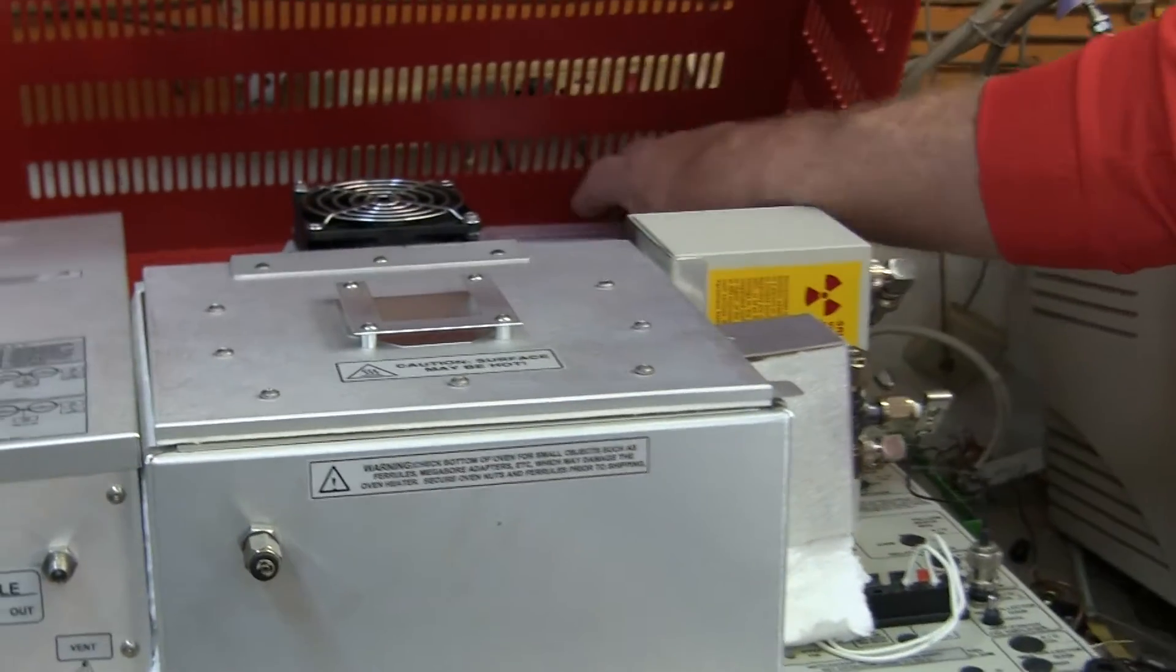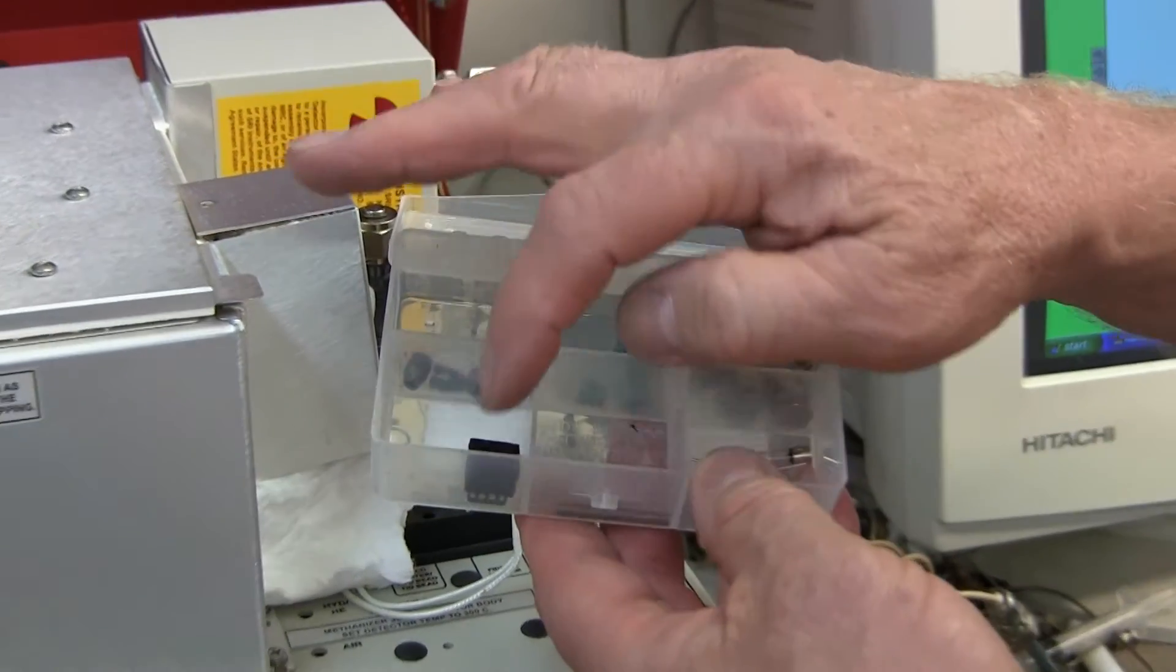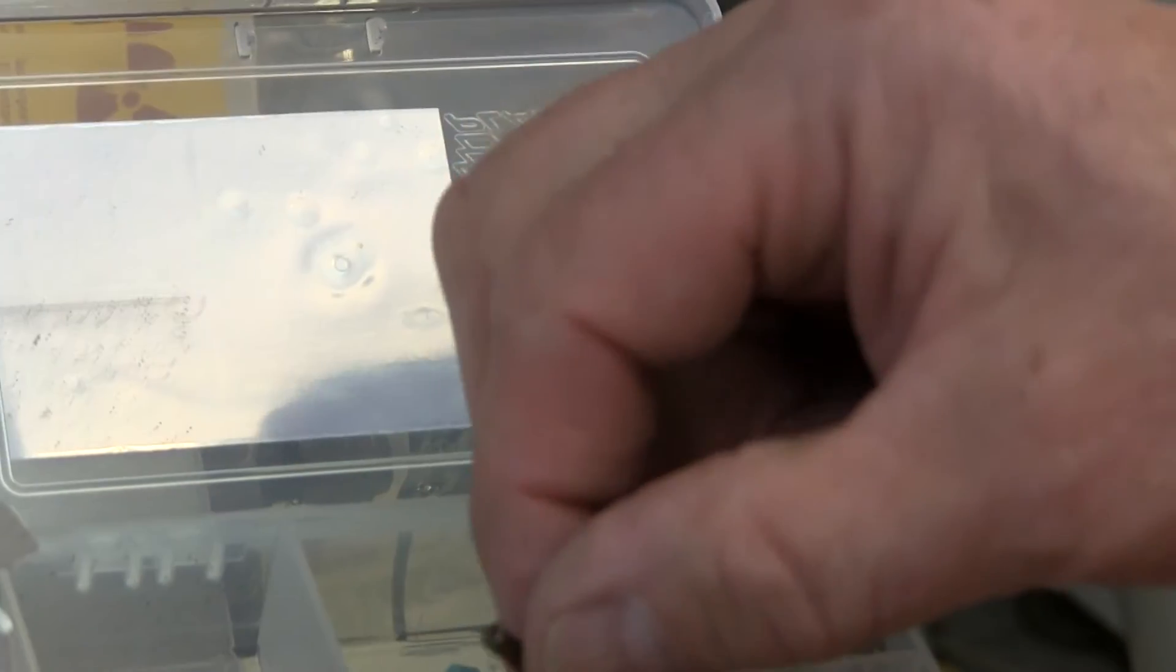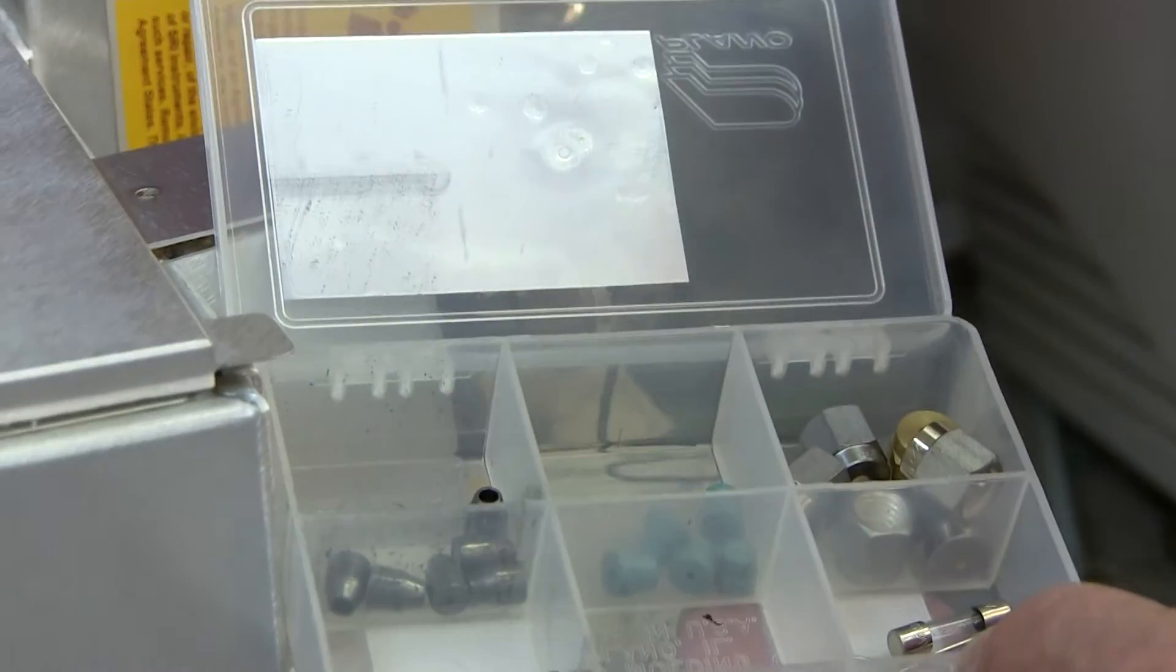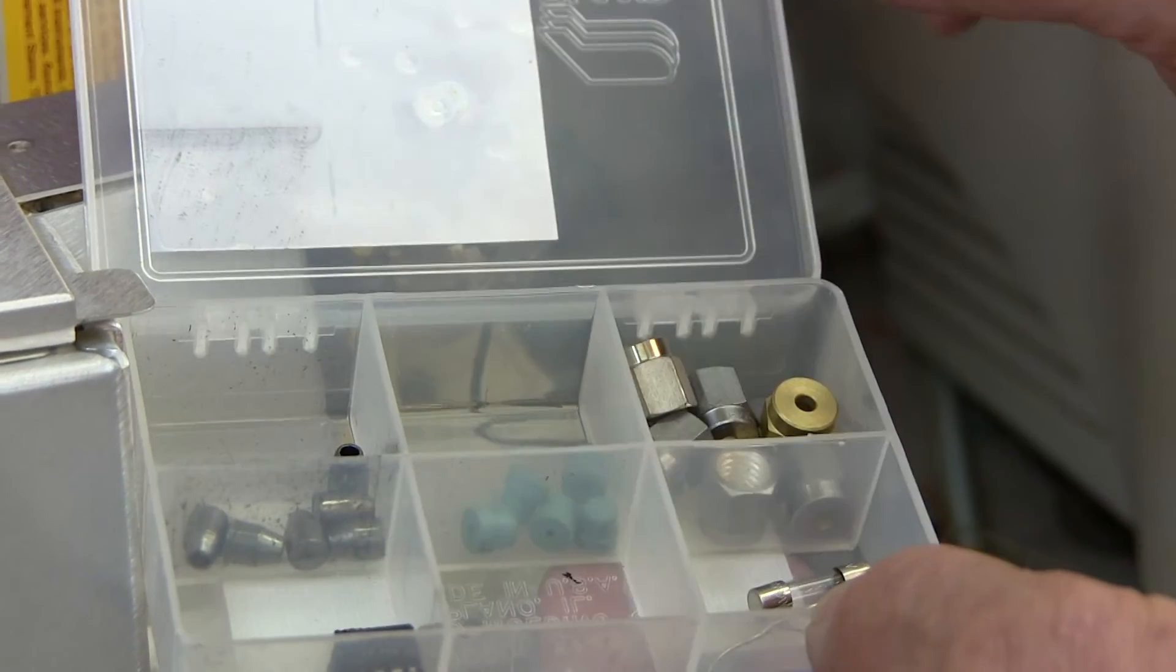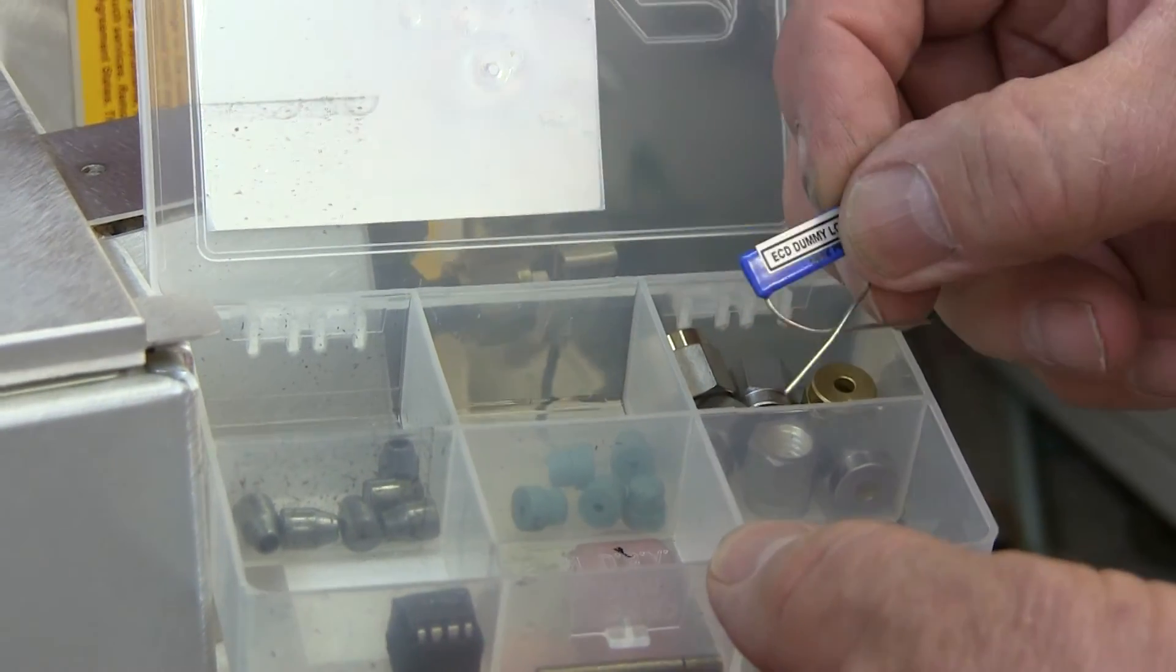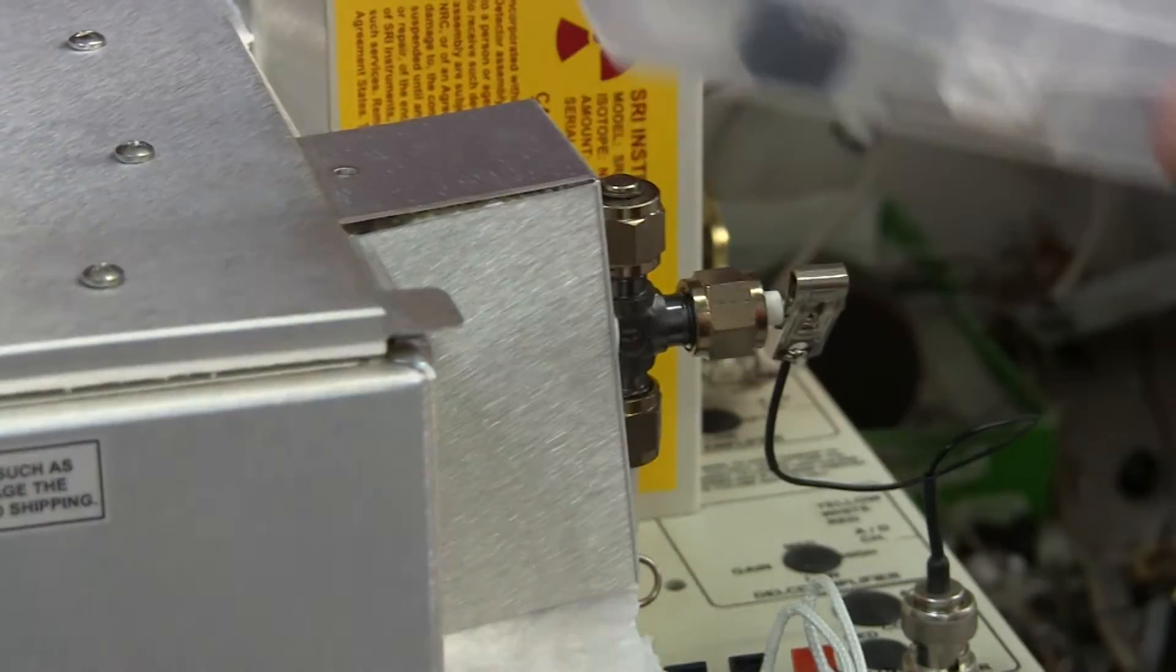In the back of the GC, there's a little parts box. This contains some common replacement parts: extra graphite ferrules, an extra chip. In case the amplifier chip has a problem, you can replace it. You have a little adapter so that you can make a syringe injection onto your column. There are a variety of septa, replacement septa. These septa last for thousands of injections if you don't over tighten them. But eventually they need to be replaced. The part number to replace them is right here on the lid. You have some extra nuts and ferrules. And in this case, because the GC has an electron capture detector, there's a little test resistor that enables you to test the electronics of the GC and verify that the electronics are working properly.